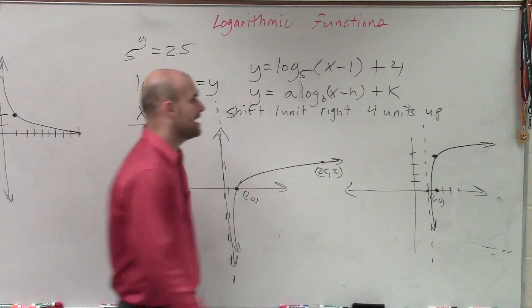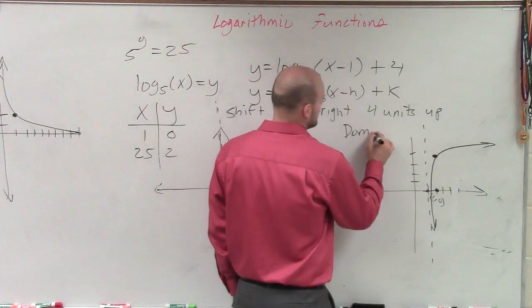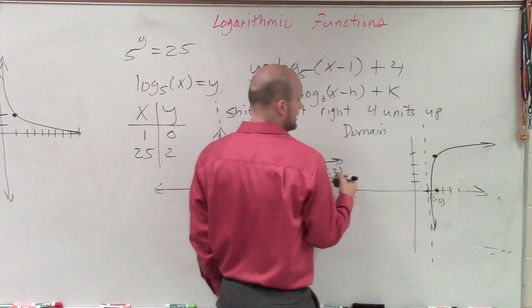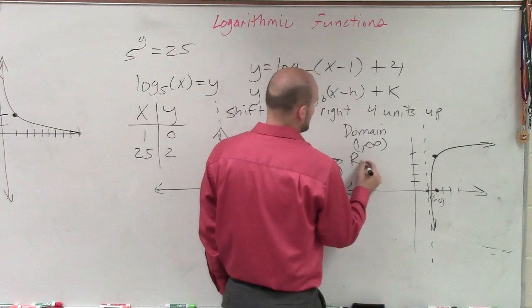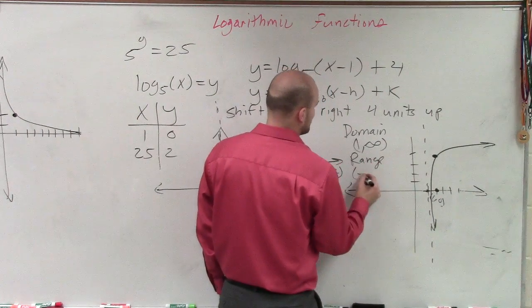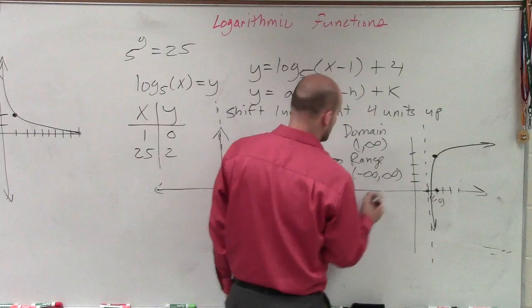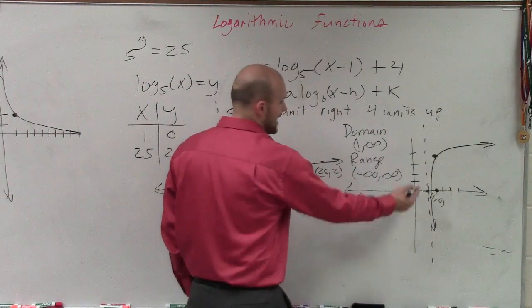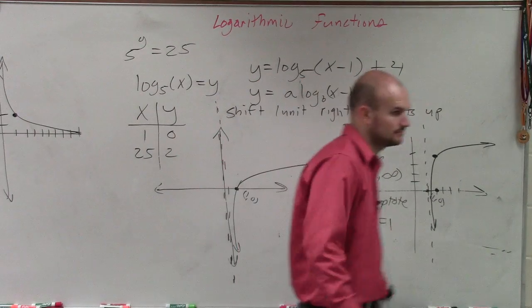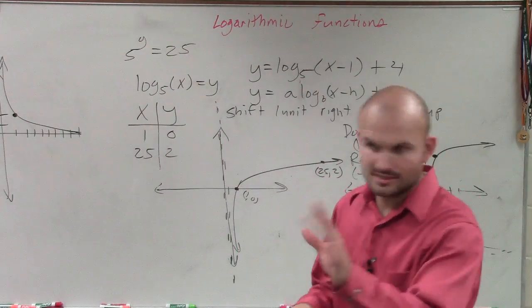Alright? So now we can say, well, the domain is from the asymptote to infinity. So the domain is now going to be from 1 to infinity. The range is going to be from negative infinity to infinity because the asymptote is at x equals 1. Alright? We're not done yet.